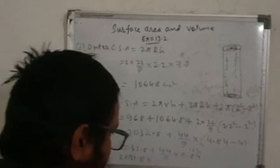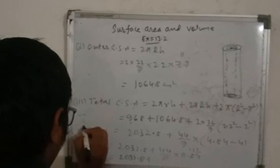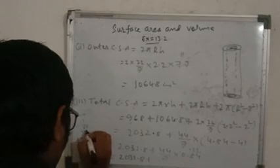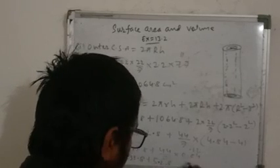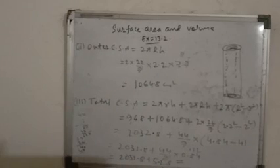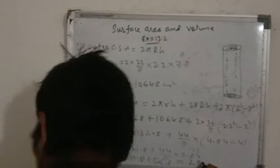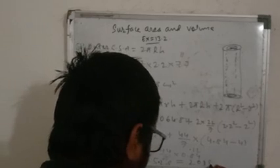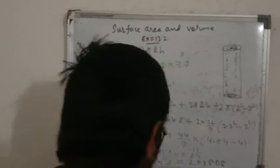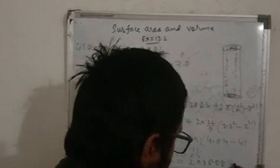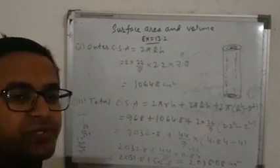So total CSA = 2032.8 + 5.28 = 2038.08 centimeter square. This is the answer for question number 3. Thank you very much.